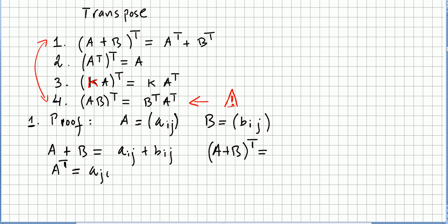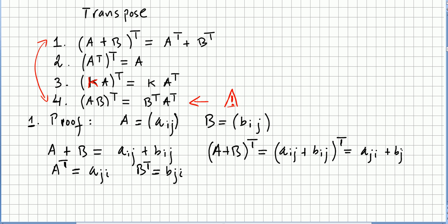A transpose has entries A_ji, and B transpose has entries B_ji, because they reverse the orders. So the transpose of (A + B) gives entries A_ji + B_ji. Now A_ji is A transpose, and B_ji is B transpose. So (A + B) transpose equals A transpose plus B transpose. And that concludes the proof.